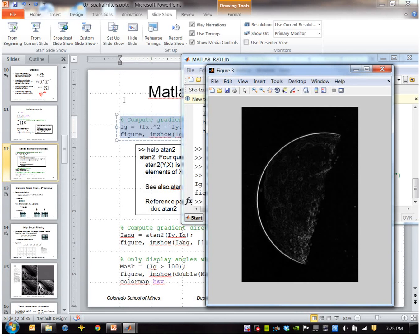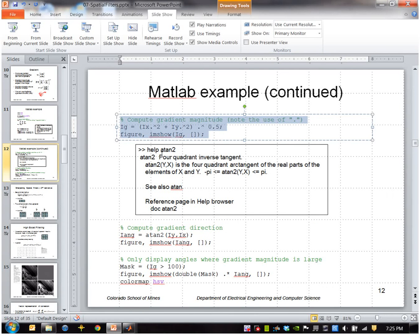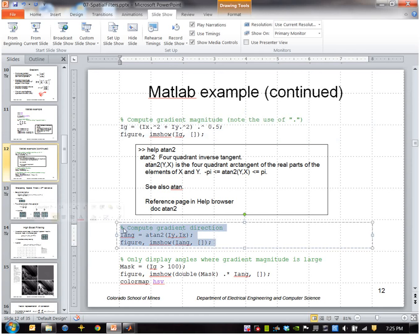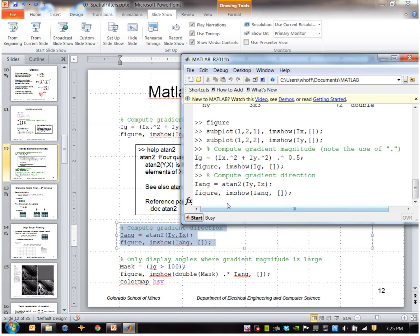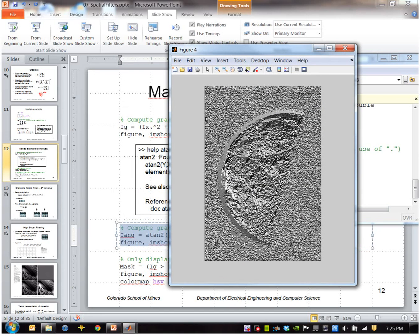To compute the angle I'm going to use the atan2 function. This is an arctangent that gives you a result between minus pi and plus pi. So it gives you all four quadrants as opposed to atan which would just give you minus pi over 2 to plus pi over 2. This is pretty noisy as you can see. The background angles are not well defined because there's not much image texture there at all. It is pretty well defined where I have the strong edges.